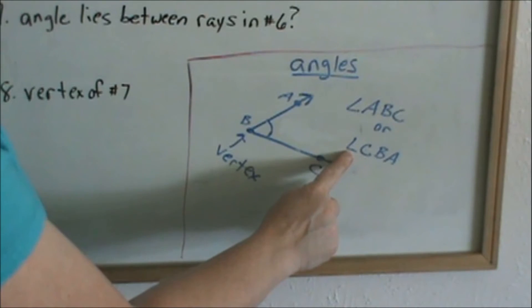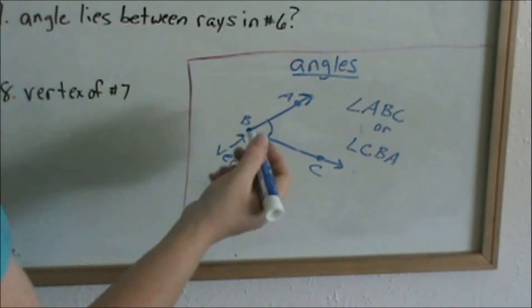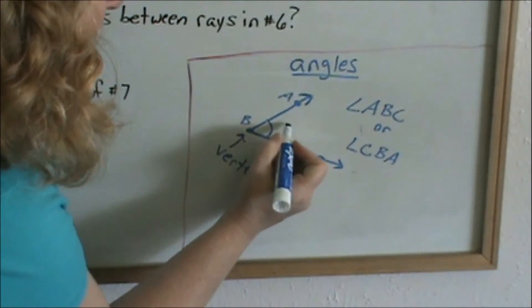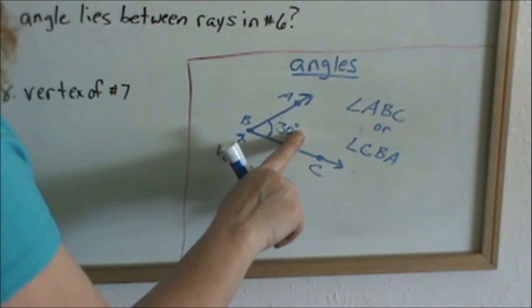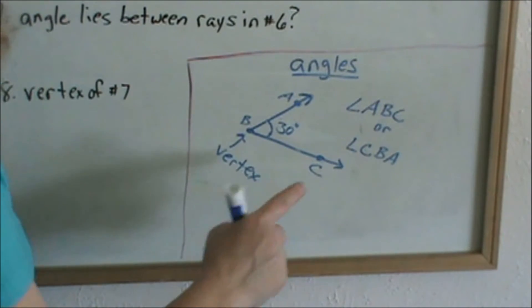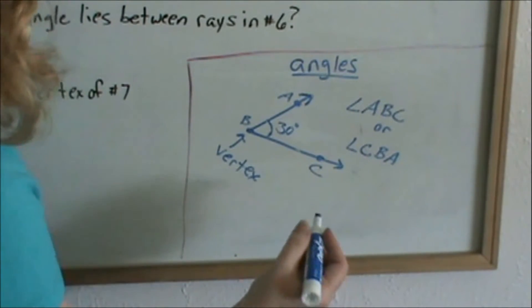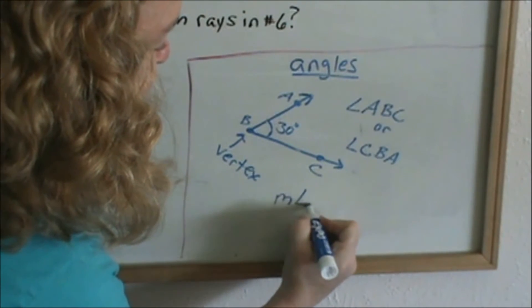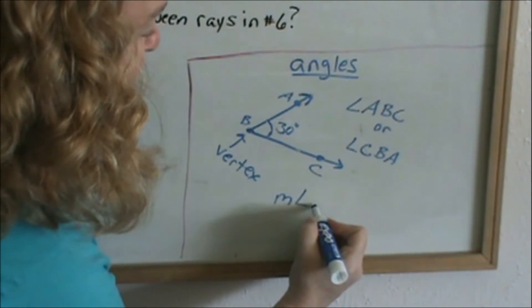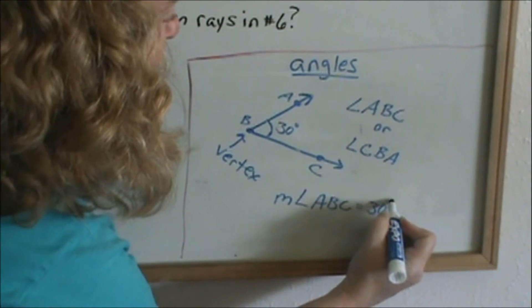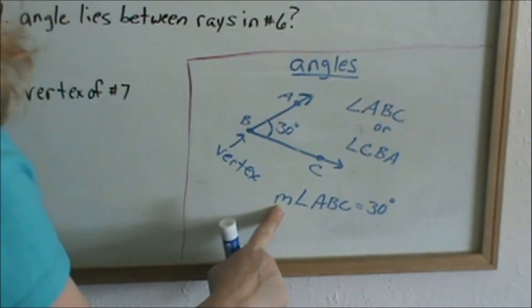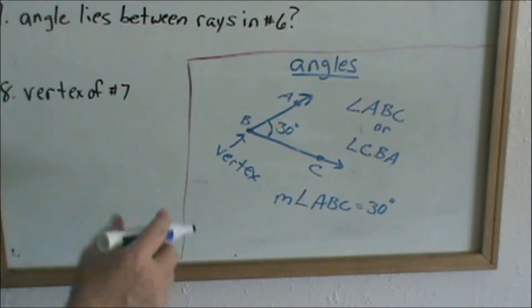This is the symbol for angle. Another thing that you might see, let's just say that this angle was 30 degrees. Angles are measured with degrees, and that's your little degree symbol that is a unit. So if this measure was 30 degrees, you might see an M out in front of your angle symbol, and so we would say the measure of angle A, B, C equals 30 degrees. This little M means the measure. Alright, now let's look at some of your problems.